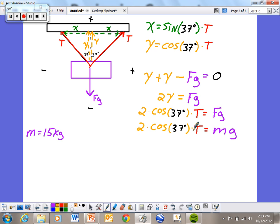Finishing up, we're going to solve for T because that's what we're looking for. So T is going to equal the M, which is given as 15 kilograms in the problem, times G, which is 9.8 meters per second squared. I have to divide that by the two cosine 37 degrees.